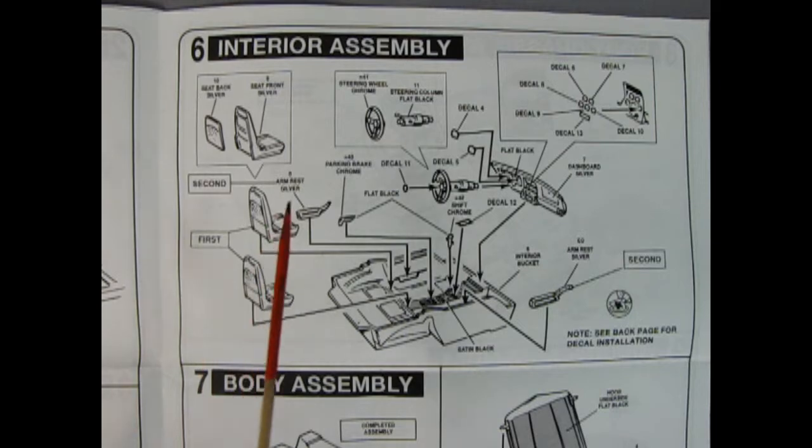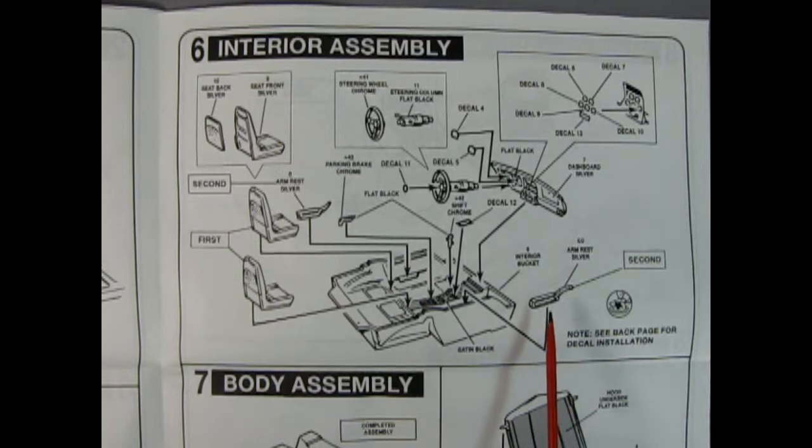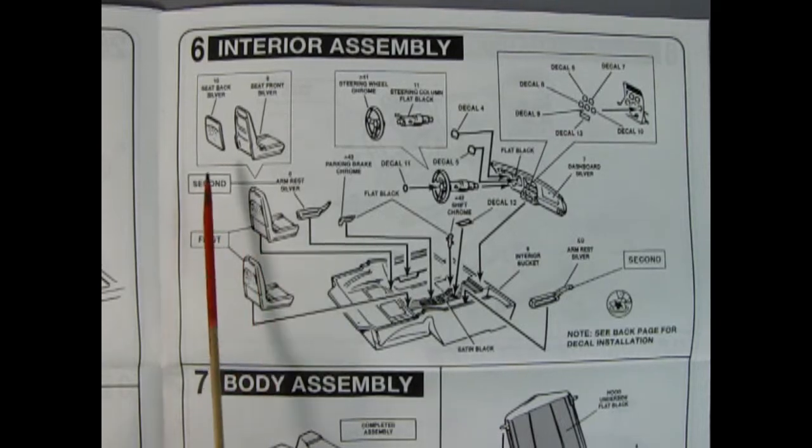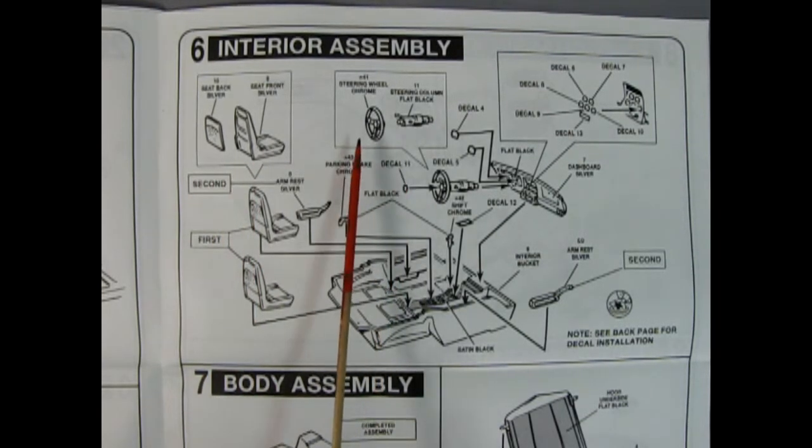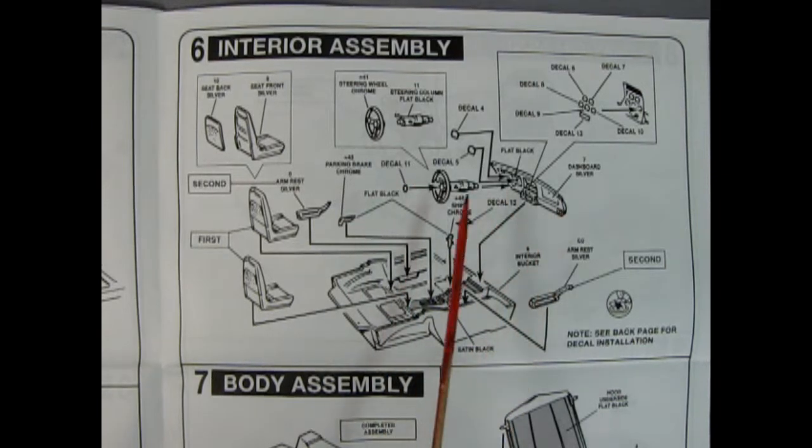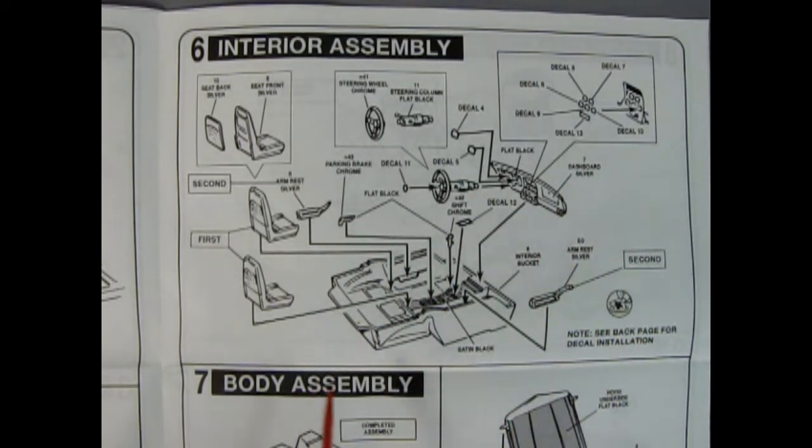Assembly 6 shows our interior being glued together. This comes in with the basic tub assembly but the nice part is you do get these wonderful armrests that glue into place as well as these two-piece bucket seats, a front and a back. You get a steering column with the steering wheel and then your dashboard and all the rest is decals.